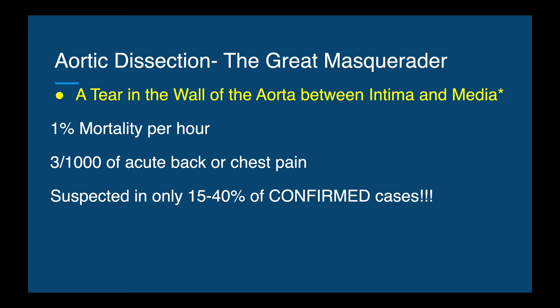Aortic dissection is the great masquerader. By definition, it is a tear in the wall of the aorta between the intima and the media, with a 1% mortality per hour. It accounts for three per 100,000 cases of acute back or chest pain. If you suspect it, you should definitely do further imaging, because even in confirmed cases, people only suspected the diagnosis 15 to 40% of the time — which is very scary.